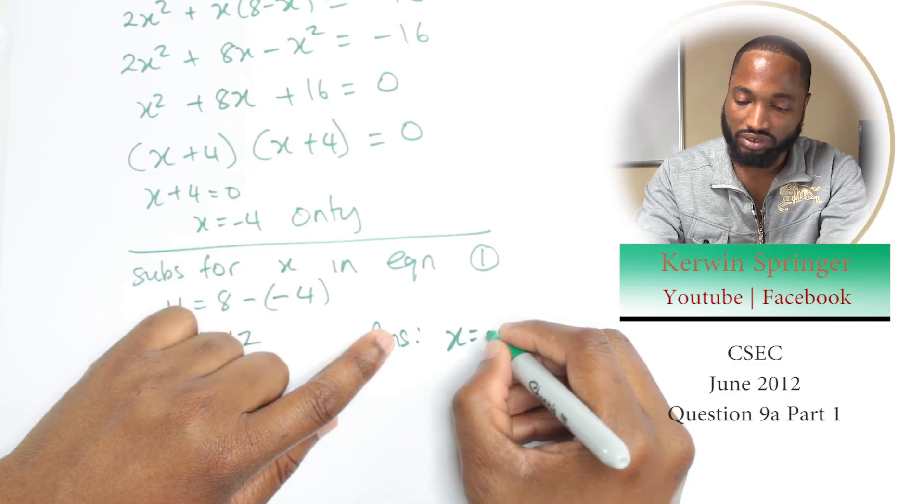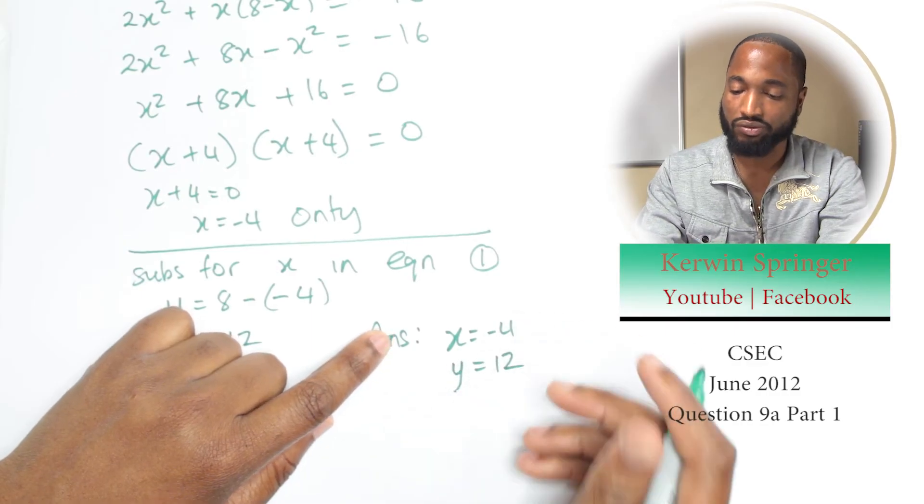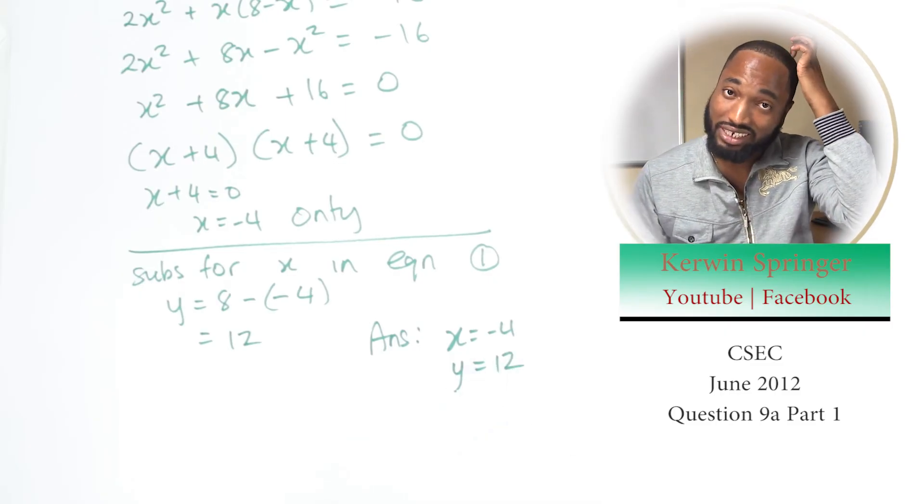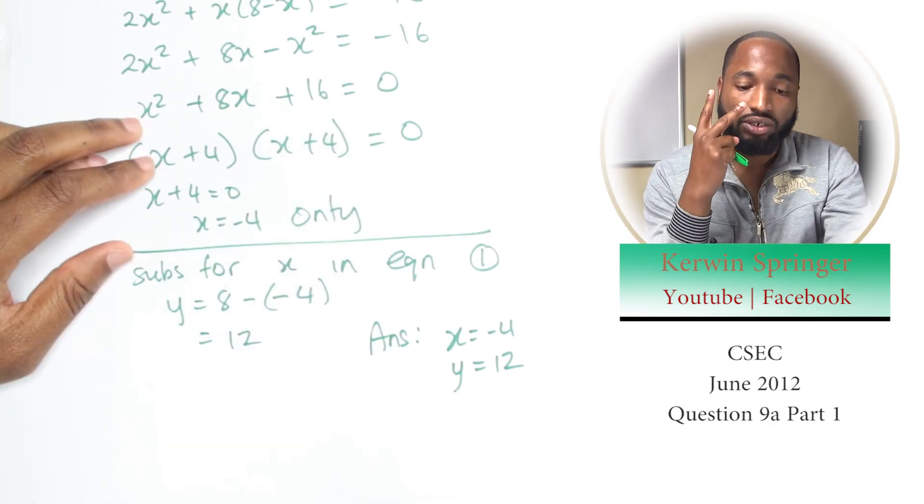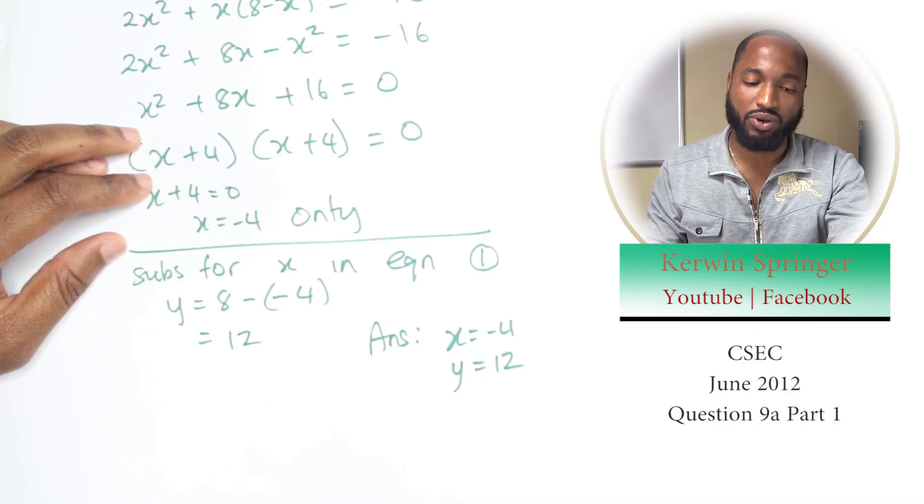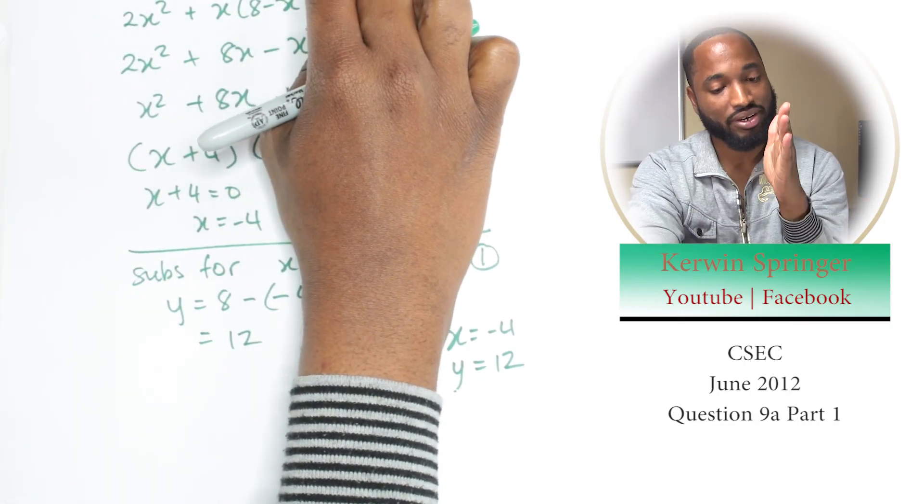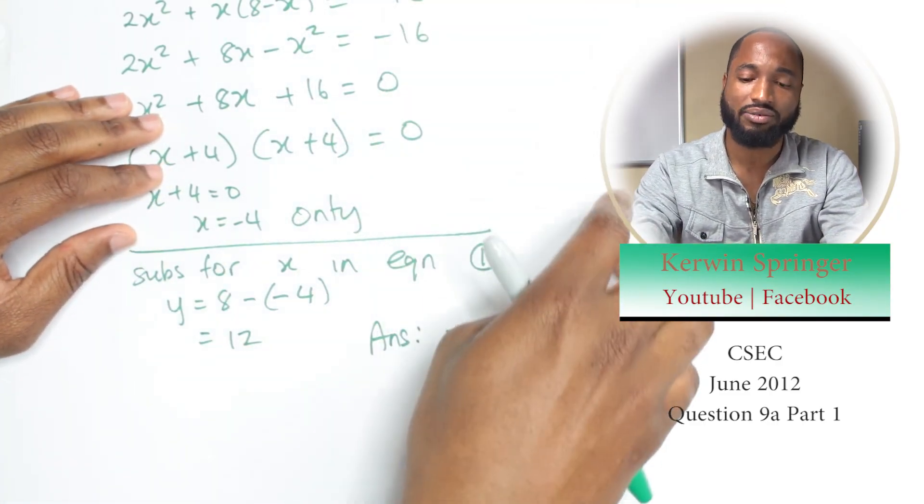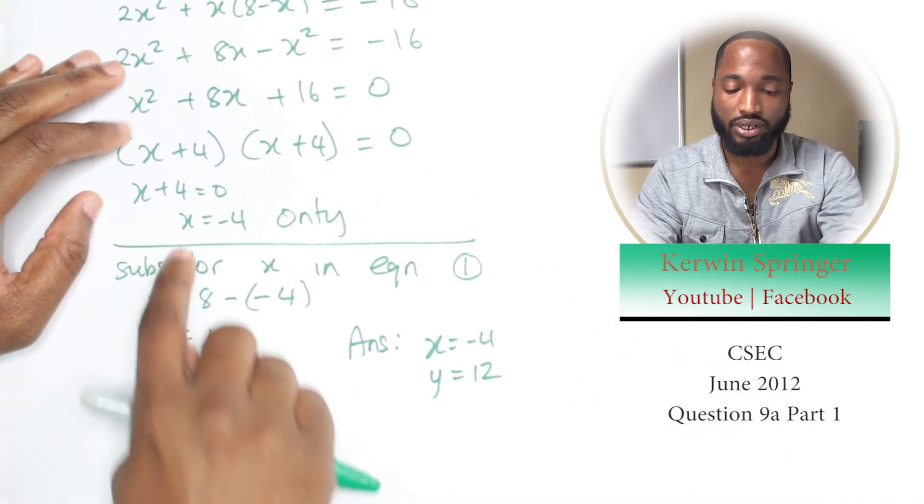Now this is interesting because normally when you get these situations with a linear and a nonlinear and you get a quadratic equation, you're going to get two answers for x and consequently two answers for y—two points. But what this is saying is that this curve, this line, is just coming through—it's a tangent. The next part of this question went on to ask why is it a tangent. Yes, it is, because you only get one answer.